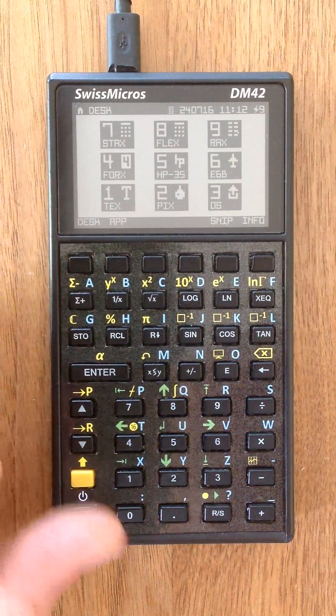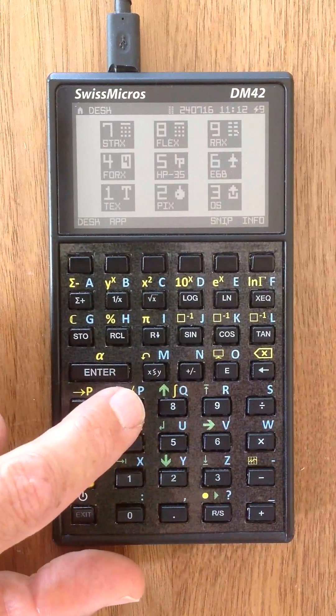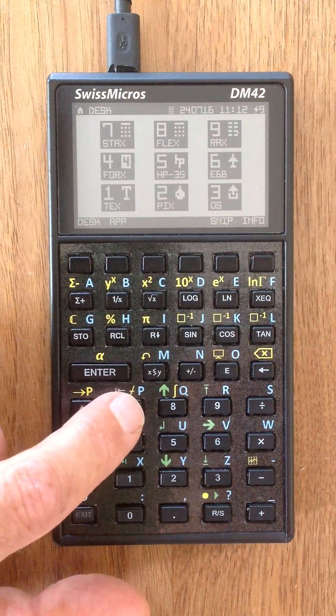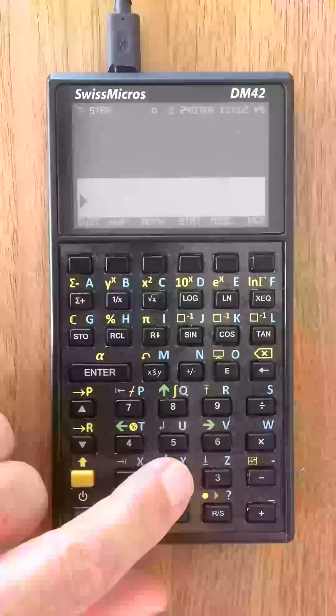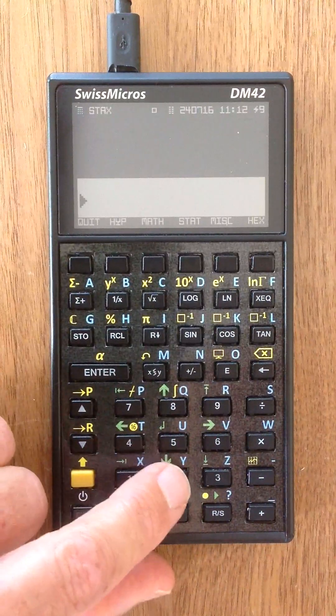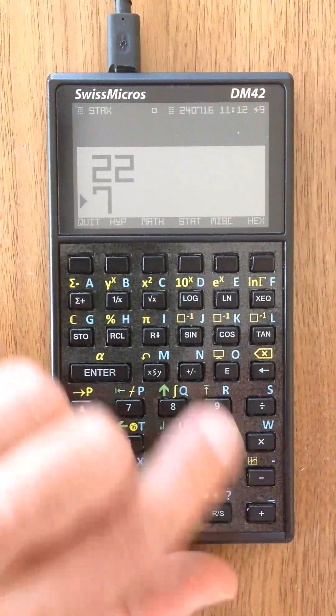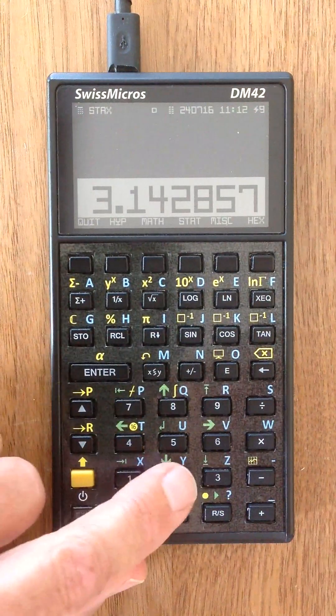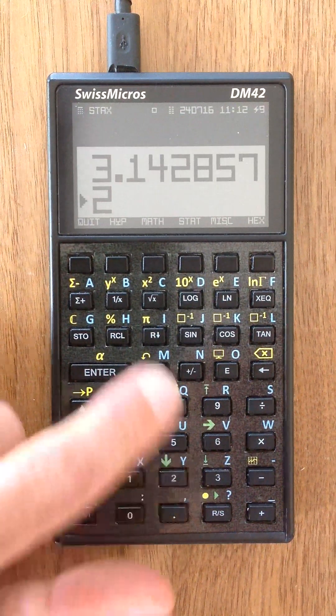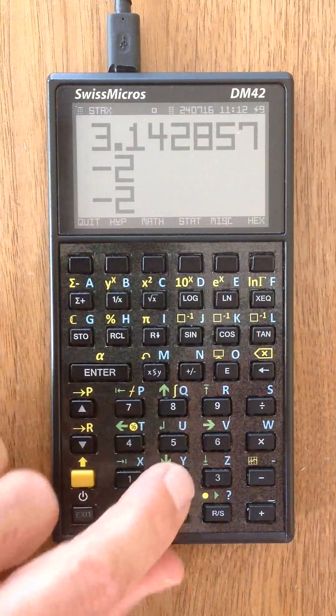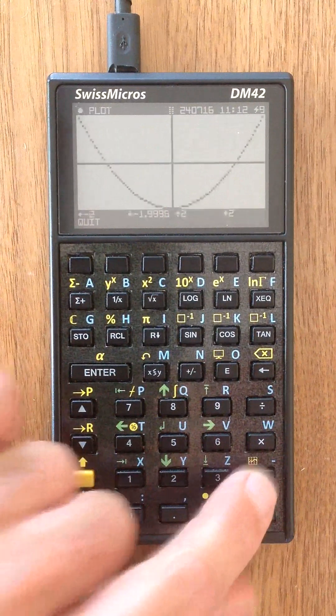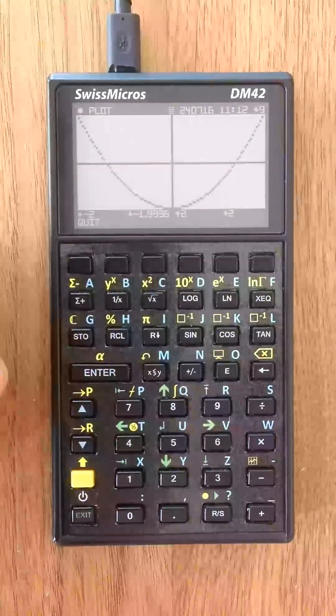So, the first application and maybe most important application is a simple RPN calculator called Stacks. But it can also record keys and, for instance, show you the function of this recorded function.